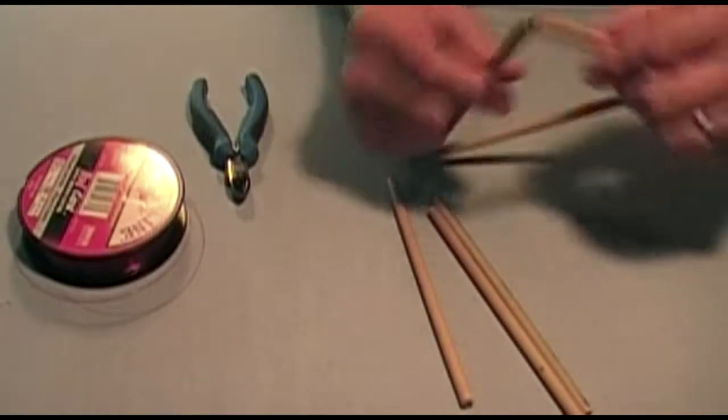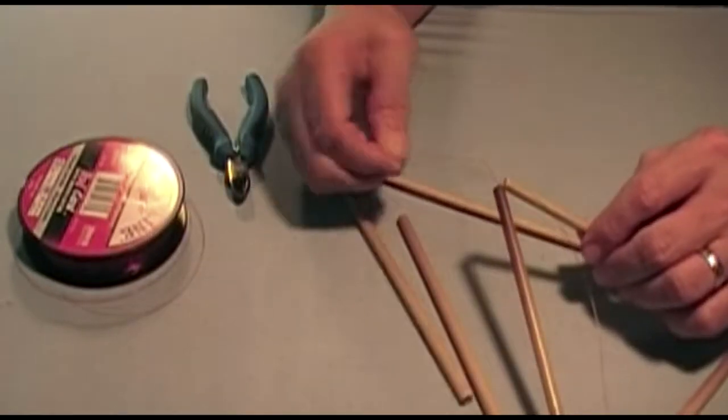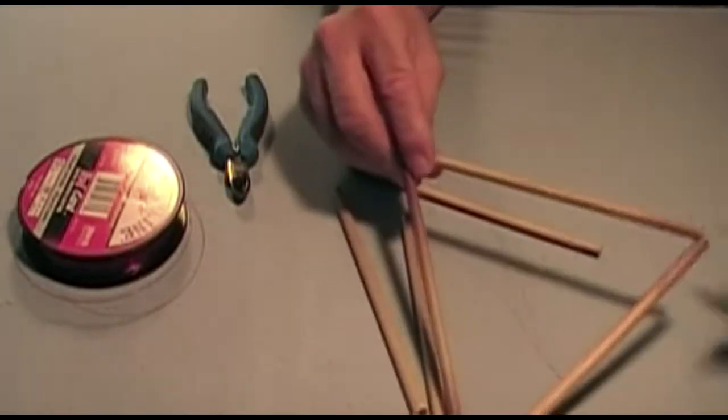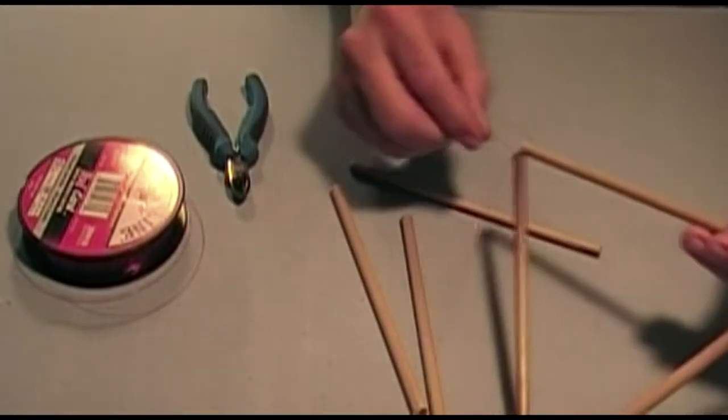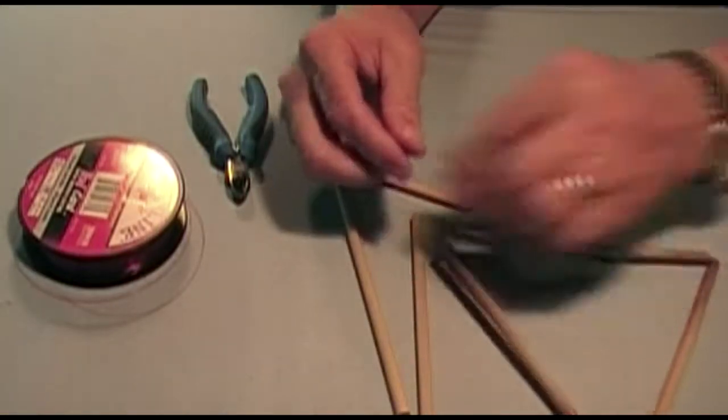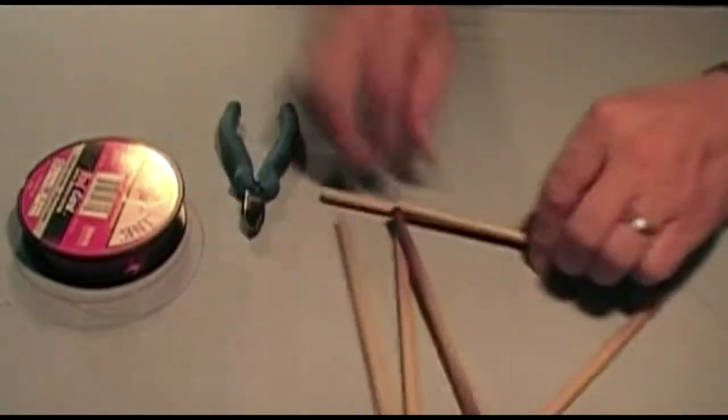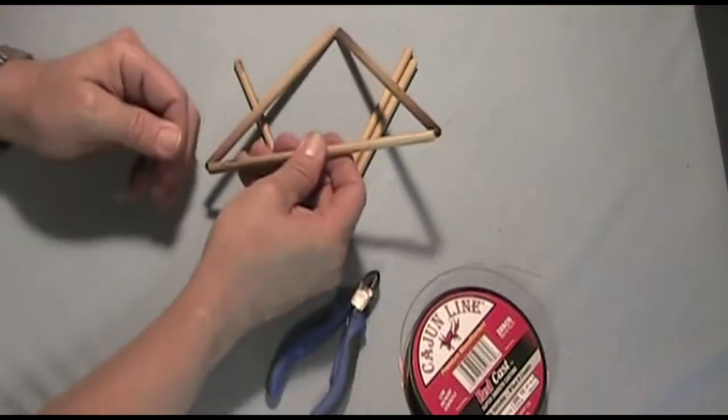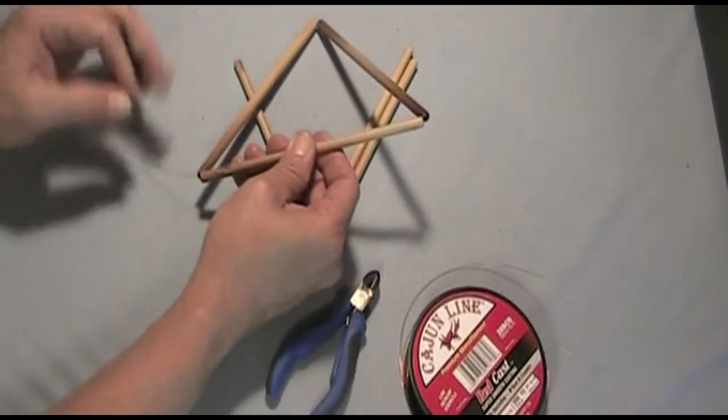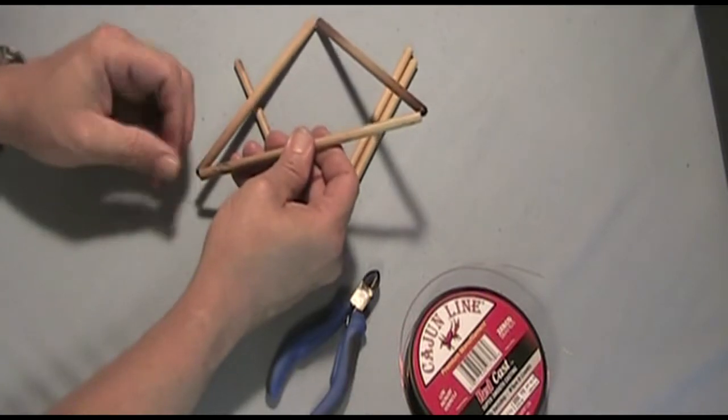After the knot is tied, one strand is snipped at about one half inch. The longer strand is then forced back into the lumen of one edge piece. It is then used to pull the knot inside the lumen, hiding the knot. The longer strand is then snipped close and also disappears.